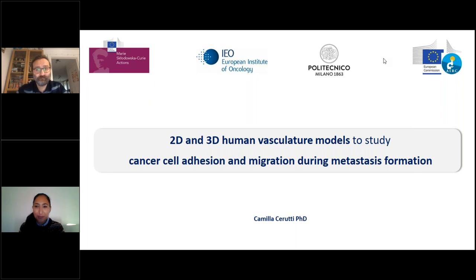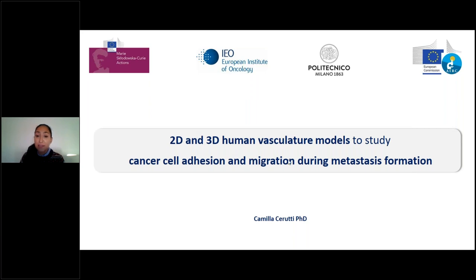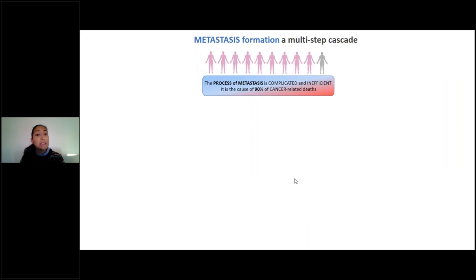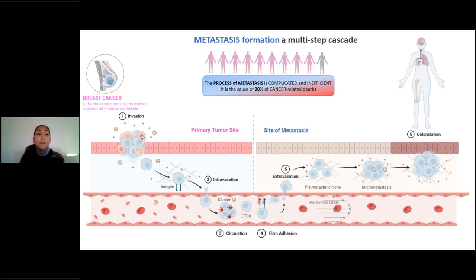Thank you very much for the opportunity to present at the ERC webinar series Cellular Behaviour and Disease Models. I will present 2D and 3D Human Vasculature Models to study Cancer Cell Adhesion and Migration during Metastasis. The process of metastasis is complicated and very inefficient; however, it is still the cause of 90% of cancer-related death. Metastasis formation is a multi-step cascade where cells from the primary tumor invade and intravasate into the vasculature, becoming circulating tumor cells that eventually adhere to endothelial cells of the vasculature of the target organ, then extravasate and form metastatic niches.